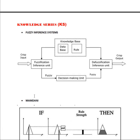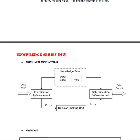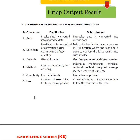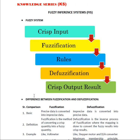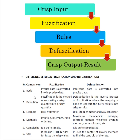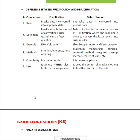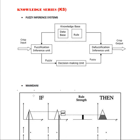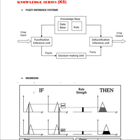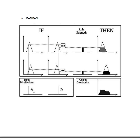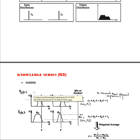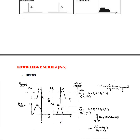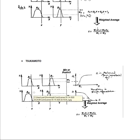I conclude here the discussions on fuzzy inference systems. I believe this has given you an idea about what fuzzy inference systems are and how they give the final crisp output based on the Mamdani, Sugeno, and Sukumoto methods. Thank you.